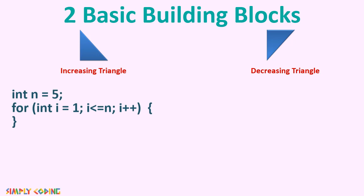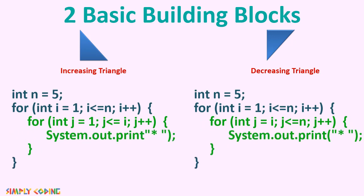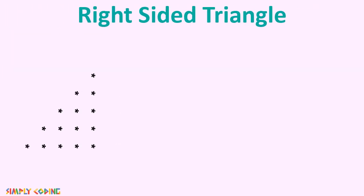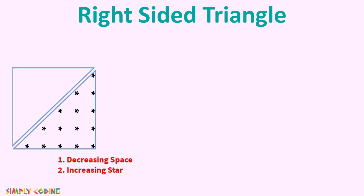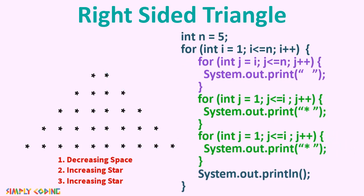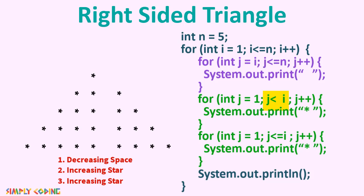Increasing triangle has an outer loop from 1 to n and inner loop from 1 to i. Decreasing triangle has an outer loop from 1 to n and inner loop from i to n. Inside the inner loop, we have a print statement to print the star, and the last statement of the outer loop is a println statement which takes you to the next line after a complete row is printed. You need to remember these two pattern codes. Any complex pattern is just broken down to these basic triangles and clubbed together in sequence. For example, a hill pattern has a decreasing space loop, an increasing star loop, and then another increasing loop — with one loop printing one less column to ensure pointed edges.